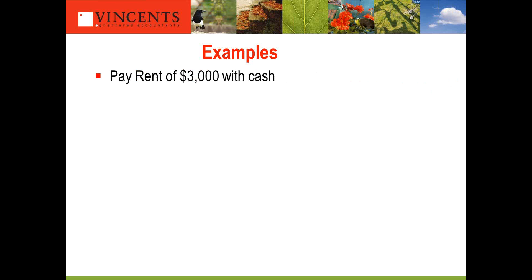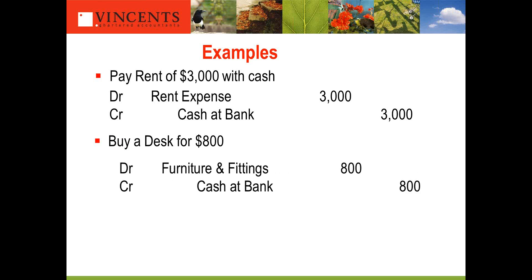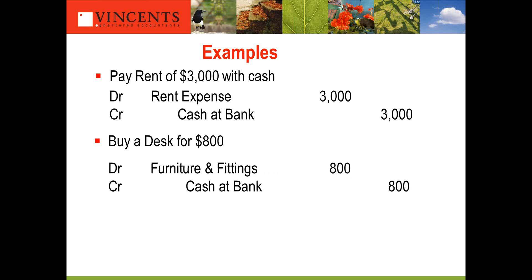Here's an example: paying rent with $3,000 in cash. You debit rent expense — expenses are debit in nature. Cash at bank is an asset, ordinarily debit in nature, but because we're decreasing our bank account, we enter a credit. So debit rent expense $3,000, credit cash at bank $3,000 — debits must always equal credits. Another example: we buy a desk for $800. Furniture and fittings is an asset, debit in nature — debit $800. Cash at bank is also an asset and debit in nature, but because it's being decreased, we credit it.